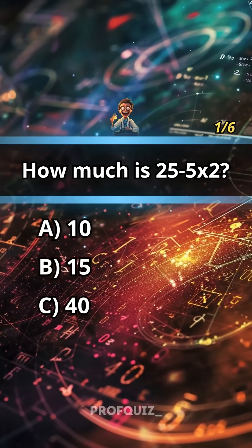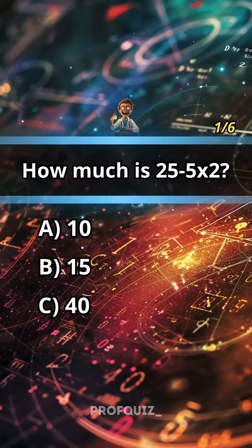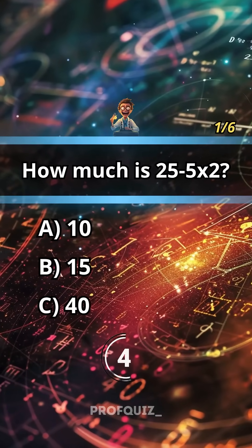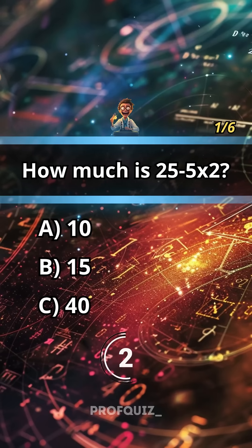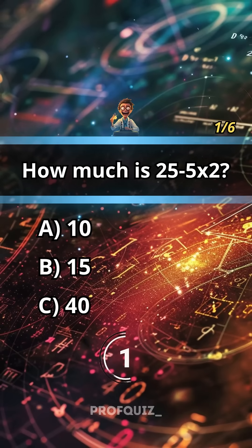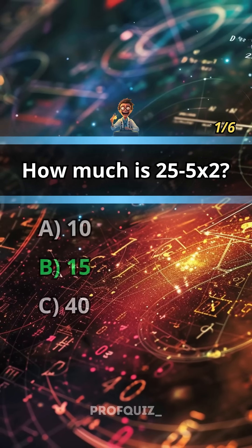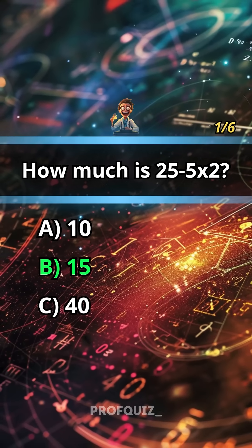How much is 25 minus 5 times 2? Answer B, 15.